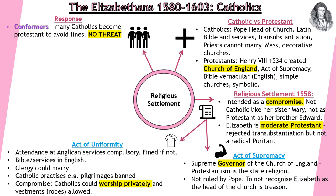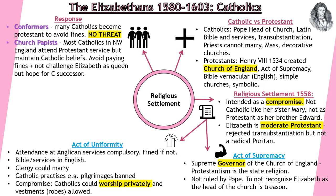Let's look at the responses then. The majority of Catholics in England we can call conformers — this is where many of them would just become Protestants to avoid fines. These conformers pose no threat to Elizabeth. Then we have church papists: most Catholics in North West England attend the Protestant church service but maintain Catholic beliefs, practising at home. They want to avoid paying the fines and they don't want to challenge Elizabeth as Queen. But one day they probably hope for a Catholic successor — they don't pose any threat because they are conforming to the law.